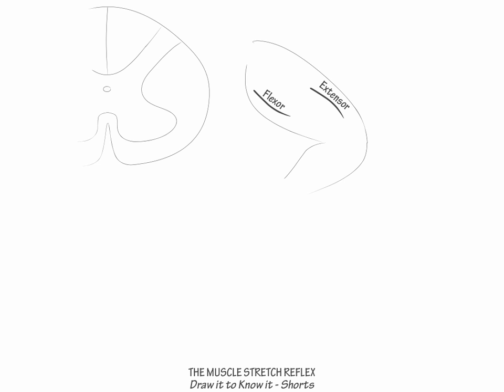Next, draw flexor and extensor motor neurons in the anterior horn of the spinal cord. Show an alpha motor nerve fiber projecting from each of them to the extensor and flexor muscles.